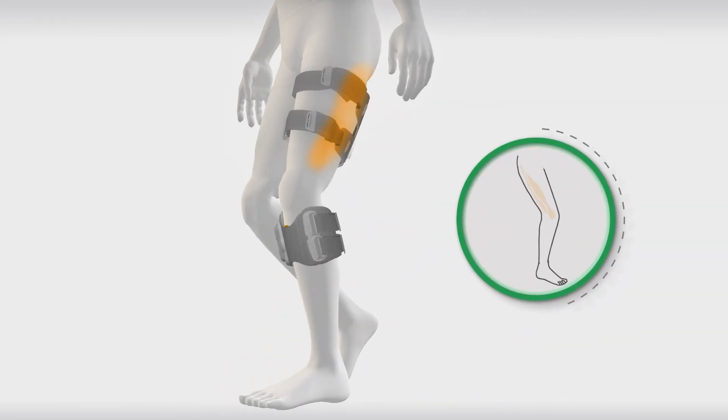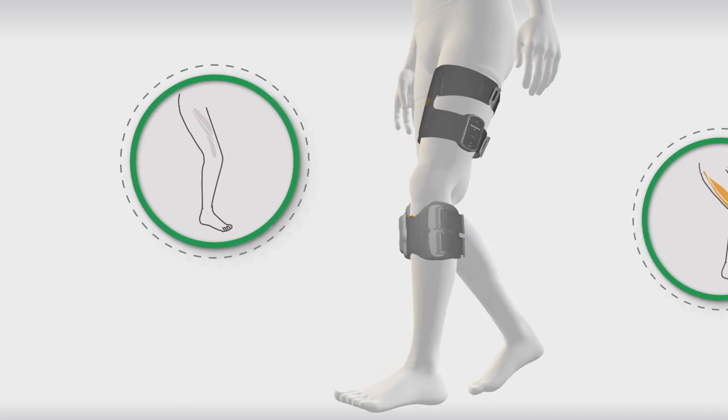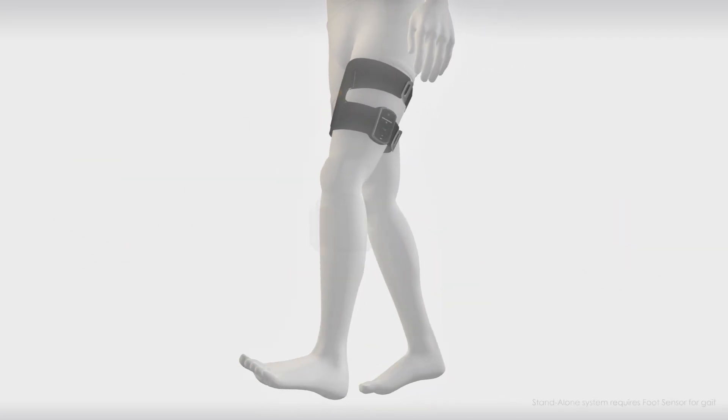The thigh cuff activates either the hamstrings or quadriceps working in tandem with the lower cuff, or new for L300GO, as a standalone system.